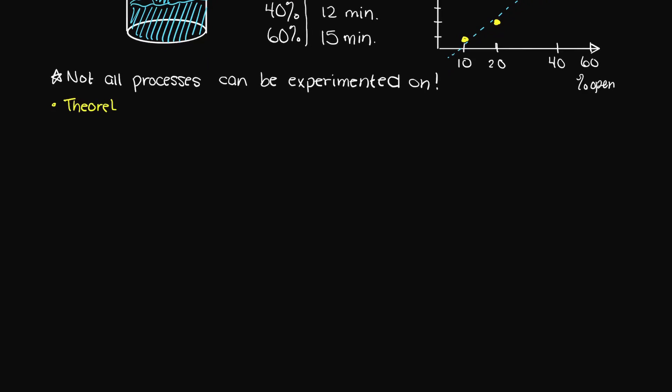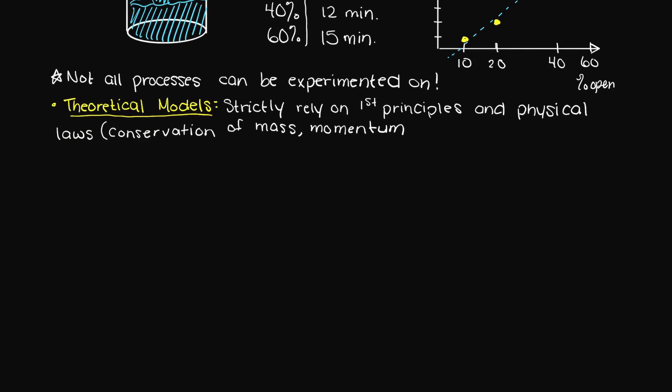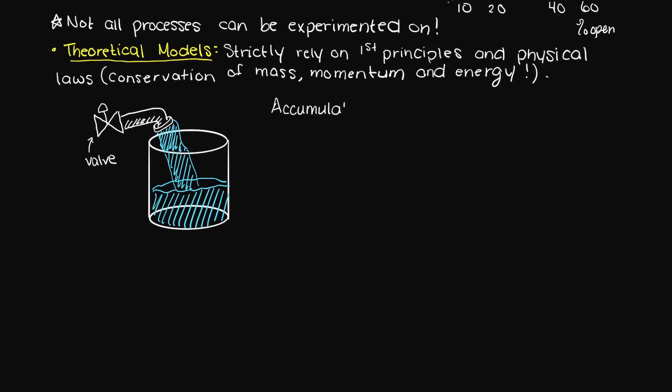Now let's talk about theoretical models. Unlike empirical models, these strictly rely on first principles and the physical laws, such as conservation of mass, energy, and momentum. Because of this, the math will become more complicated than empirical models.